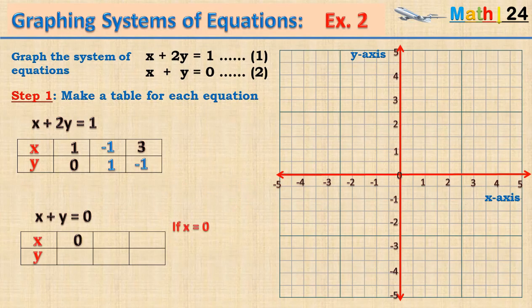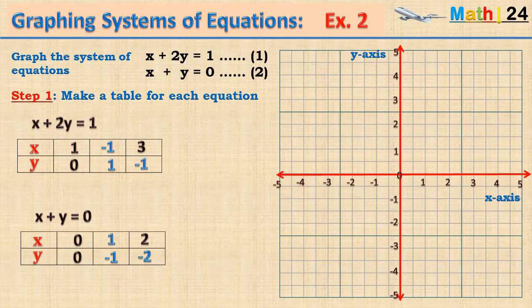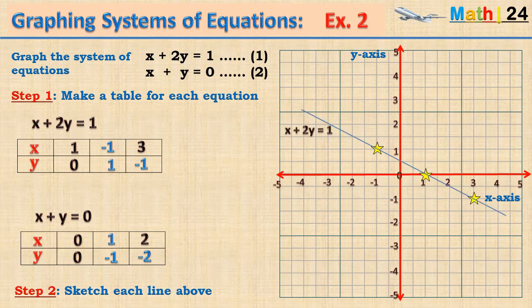For the second equation x plus y equals zero: when x is zero, y is zero; when x is one, y equals minus one because one plus minus one gives zero; when x is two, y equals minus two. We now plot the points for the first equation: (1, 0), (−1, 1), and (3, −1), linking them to form the line x plus two y equals one.